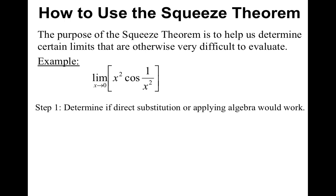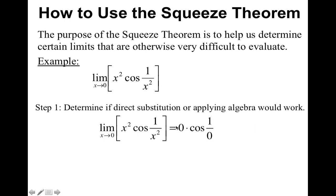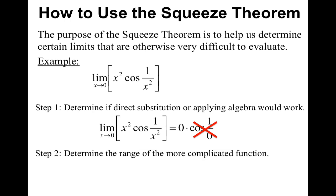The first step is to determine if direct substitution or applying algebra would work. If I plug in 0 for x, I would have cosine of 1 over 0 — well, that can't happen. So therefore, direct substitution can't work, and there's really no algebra for me to do. Now you're going to determine the range of the more complicated function, typically the trig piece. So we're going to look at cosine of 1 over x squared. In general, we should know that cosine itself is between negative 1 and 1. Therefore, the actual function cosine of 1 over x squared is also between negative 1 and 1.